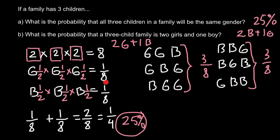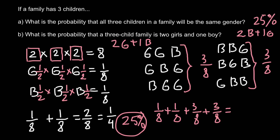Let's add all the probabilities: one eighth that all three children are girls, plus one eighth that all three are boys, plus three eighths that the family has two girls and one boy, plus three eighths that the family has two boys and one girl. Adding all these gives eight over eight, or one, or 100%. All calculations are very clear and our answer for the second question is three eighths.